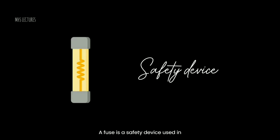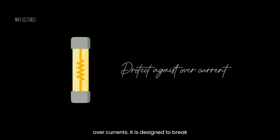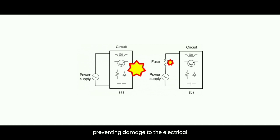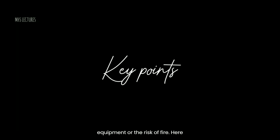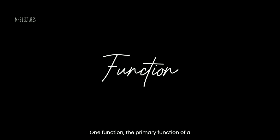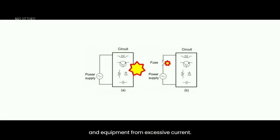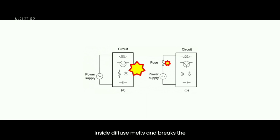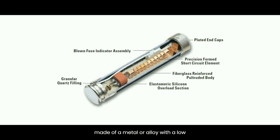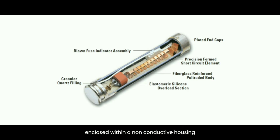A fuse is a safety device used in electrical systems to protect against overcurrents. It is designed to break the circuit and interrupt the flow of electrical current in the event of an overload or short circuit, thereby preventing damage to equipment or the risk of fire. The primary function of a fuse is to protect electrical circuits from excessive current — when the current exceeds the rated value, the fuse element melts and breaks the circuit. A typical fuse consists of a fuse element made of a metal or alloy with a low melting point, such as copper, silver, or aluminum, enclosed within a non-conductive housing made of glass, ceramic, or plastic.